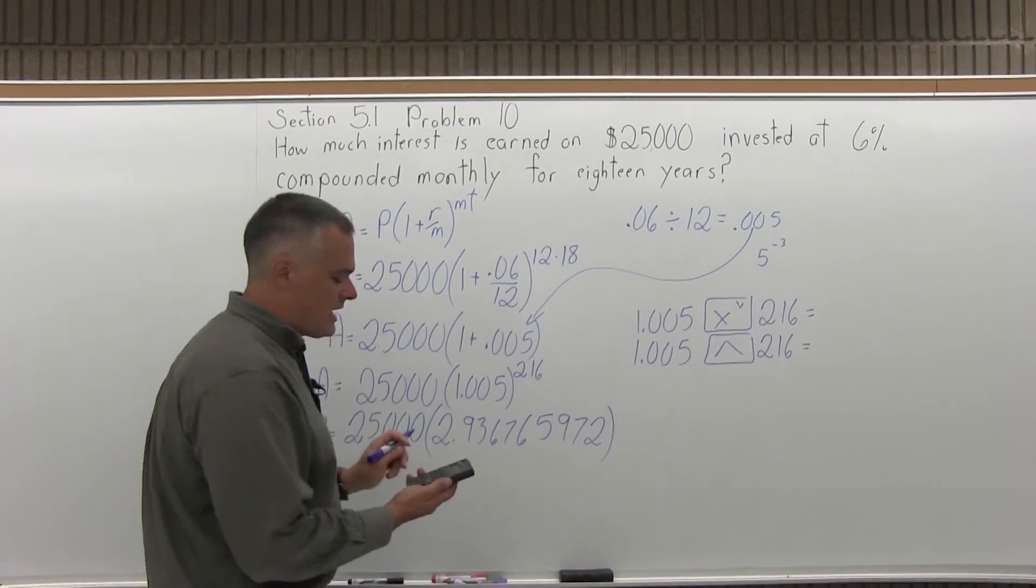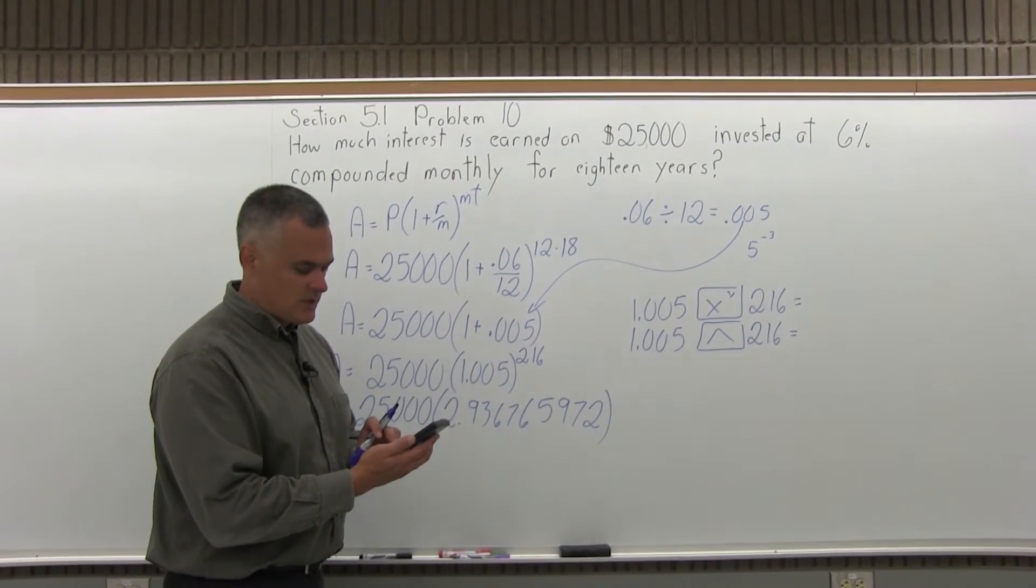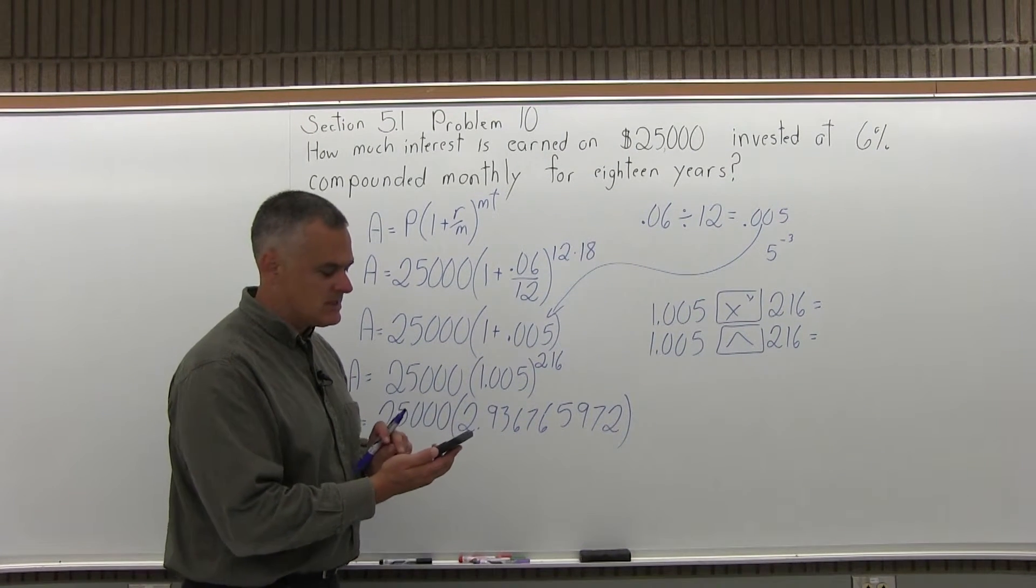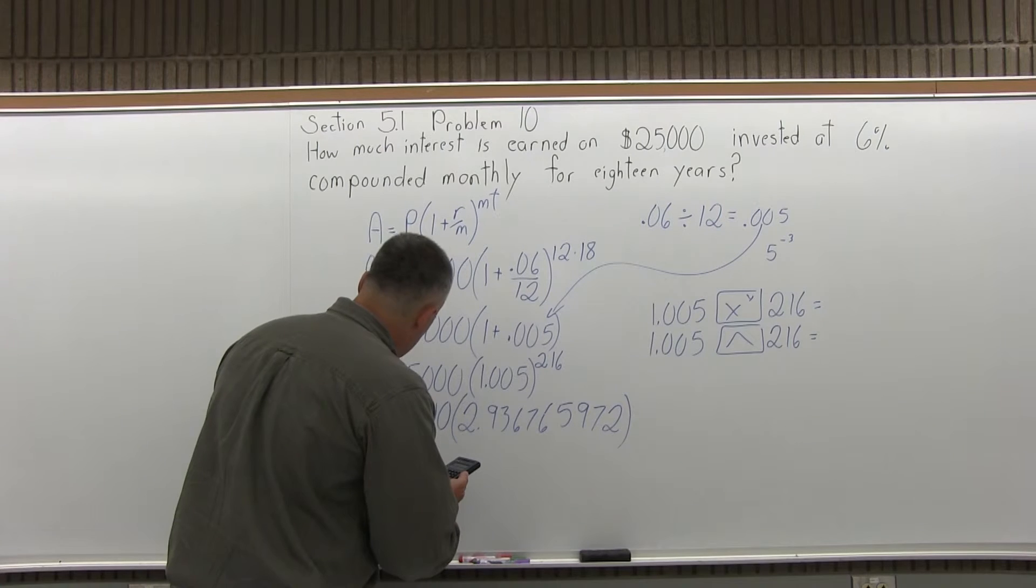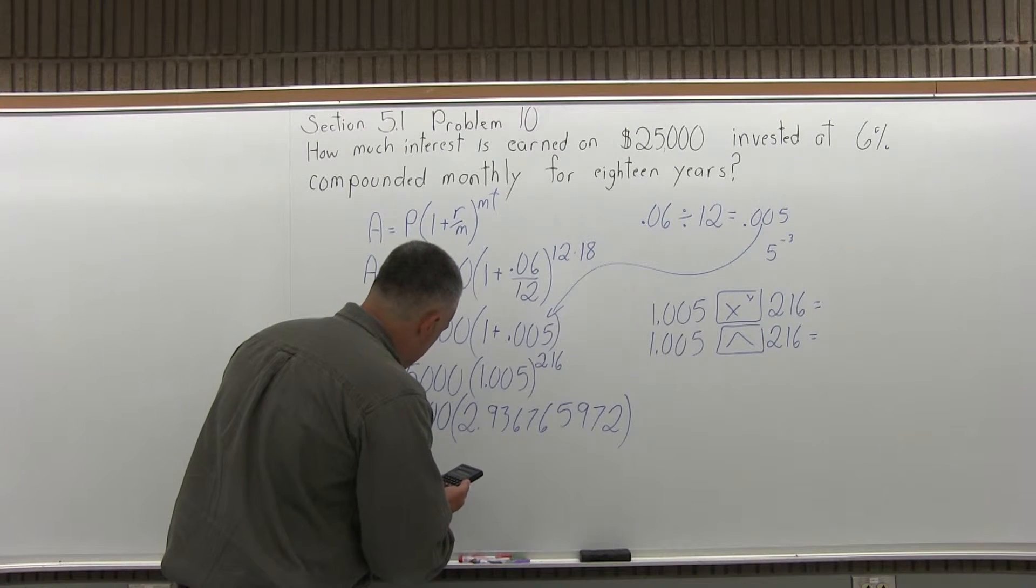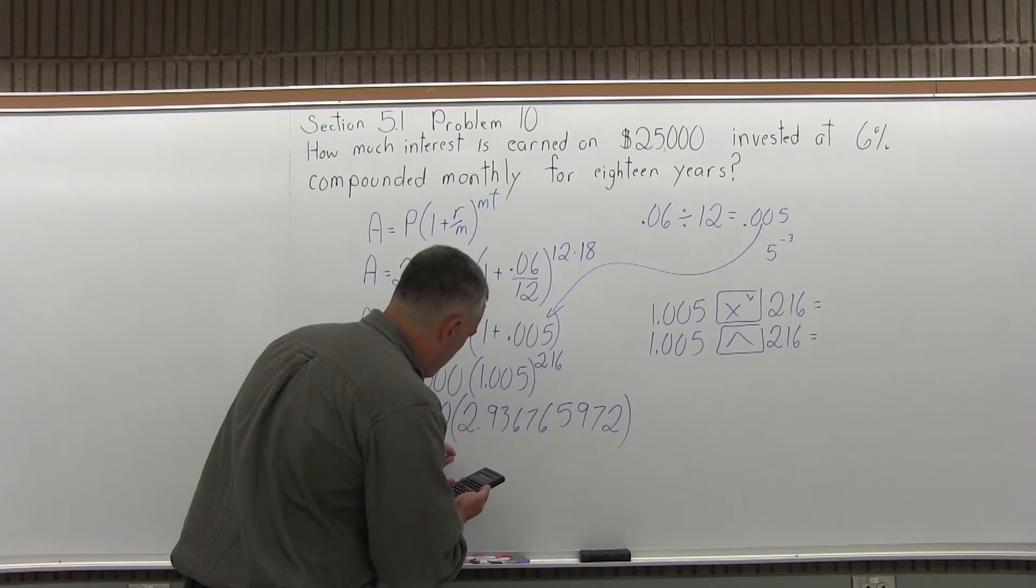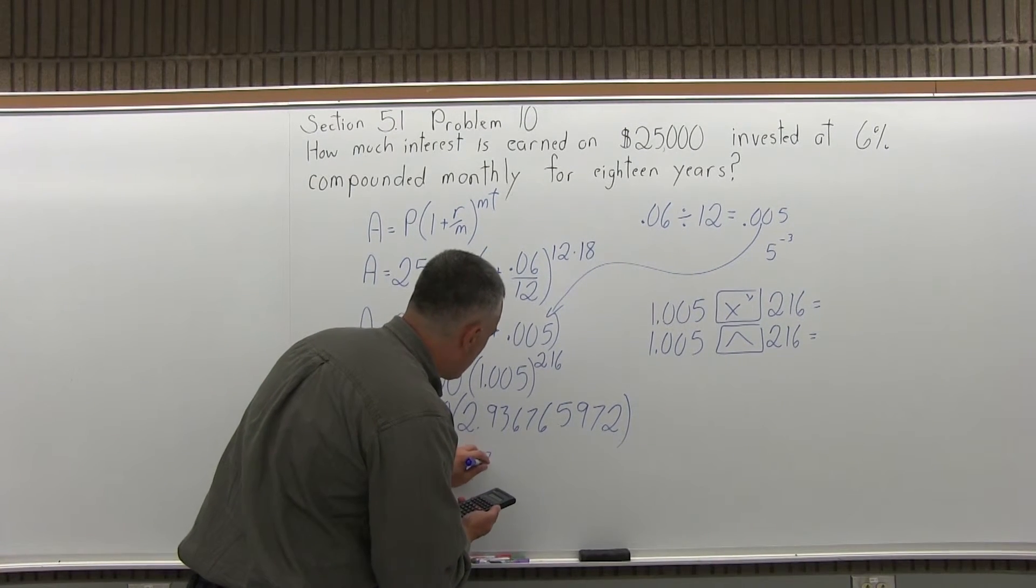And when I do that, the number on the screen now times the 25,000 that was multiplied times the parentheses, the answer I get is 73419.1493.